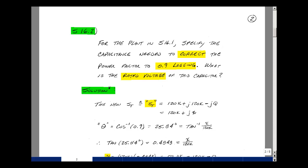For the plant that was in supplemental problem 16.1, can you specify the capacitance needed to correct the power factor from 0.707 lagging to 0.9 lagging? What would be the rated voltage on this capacitor?